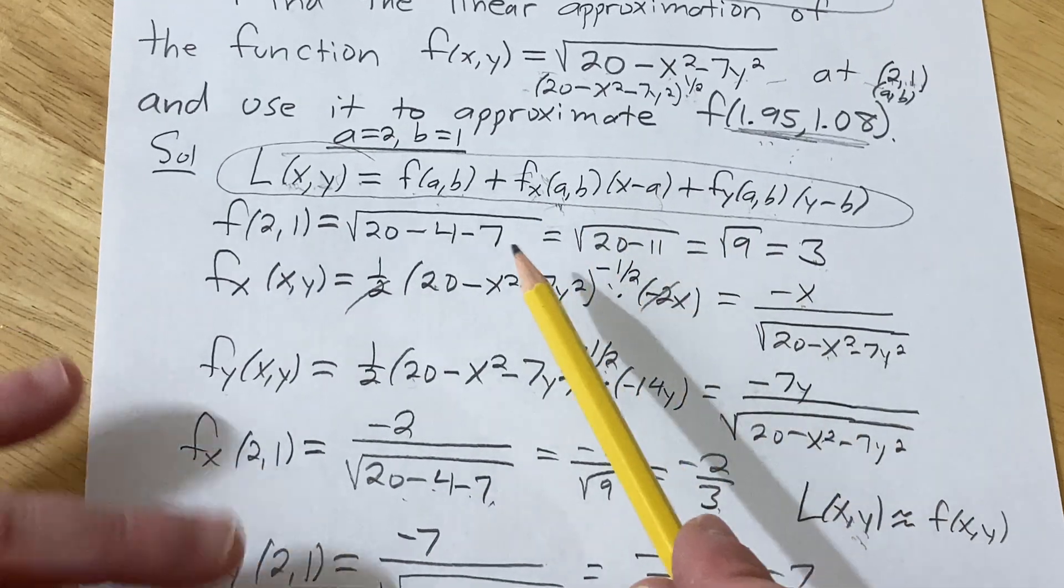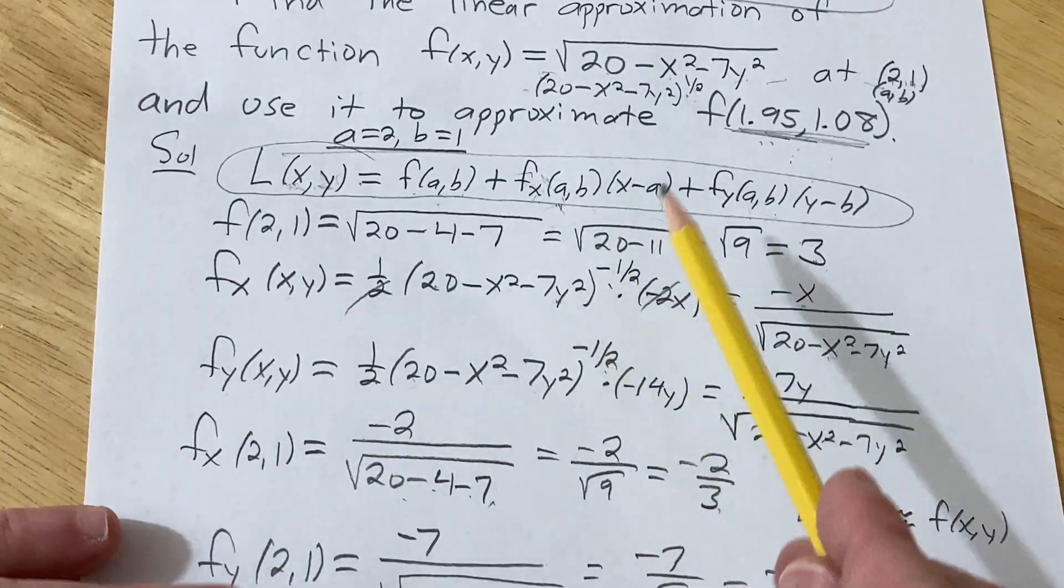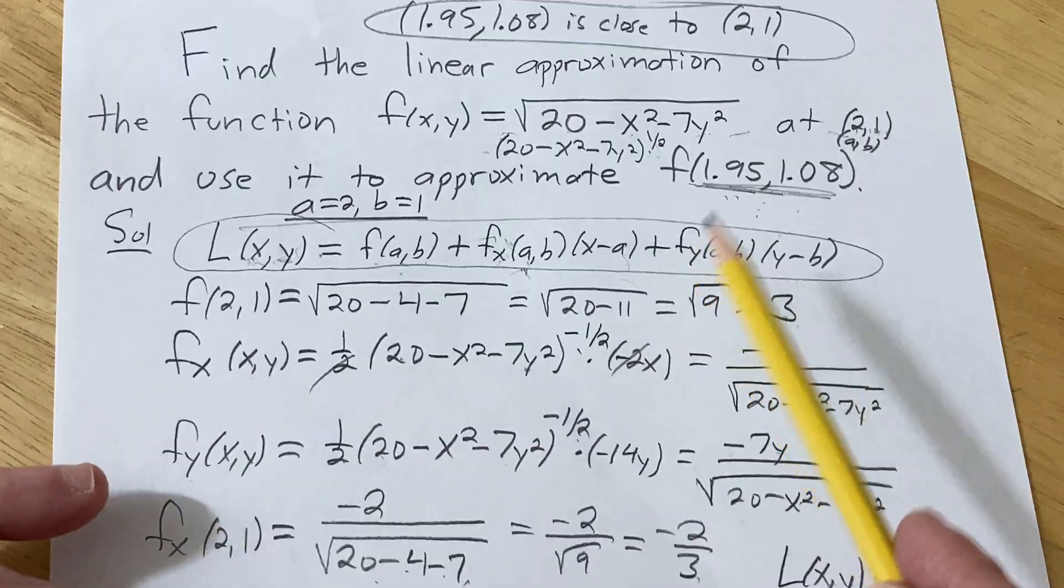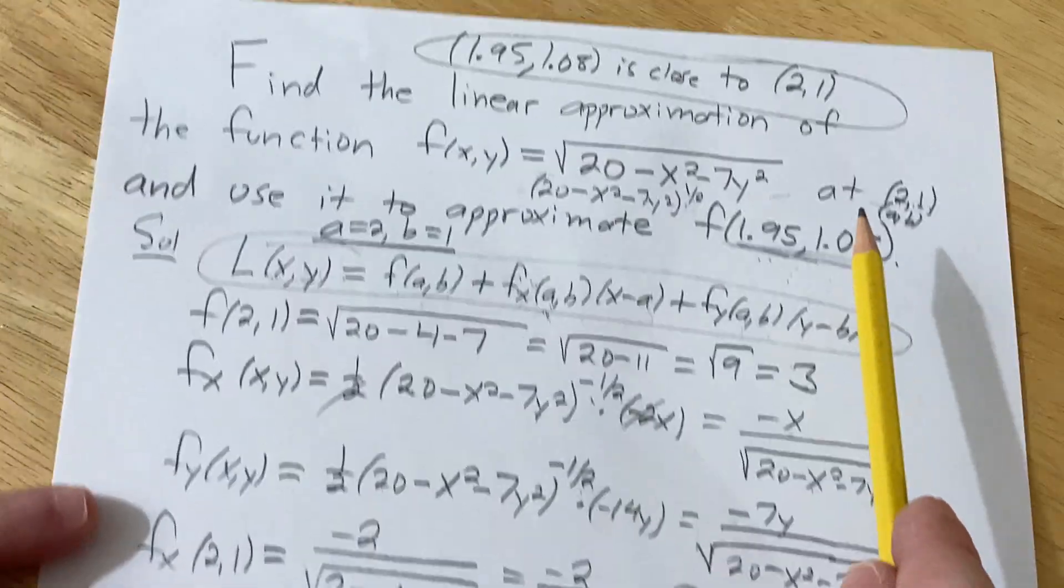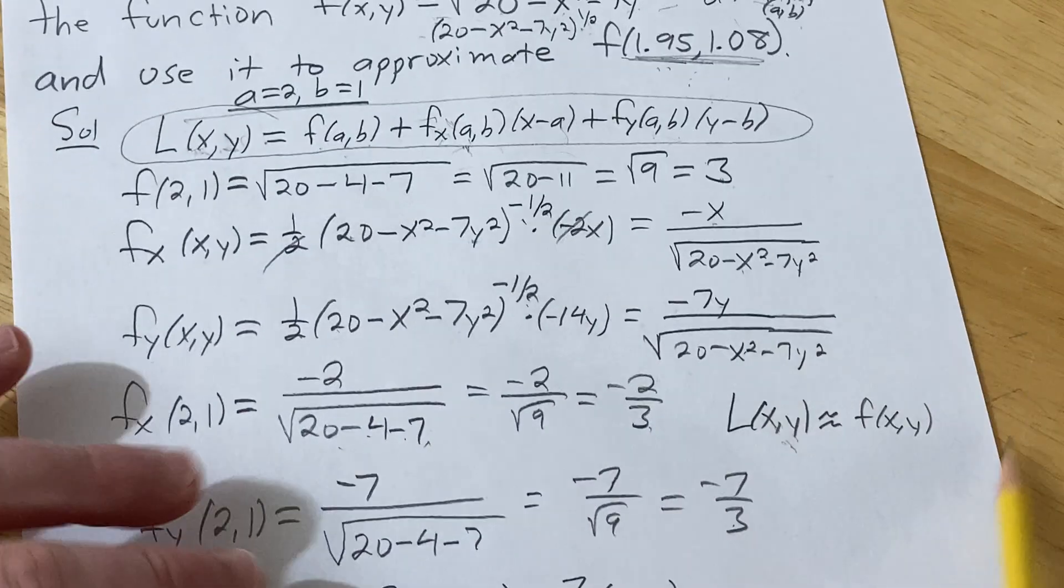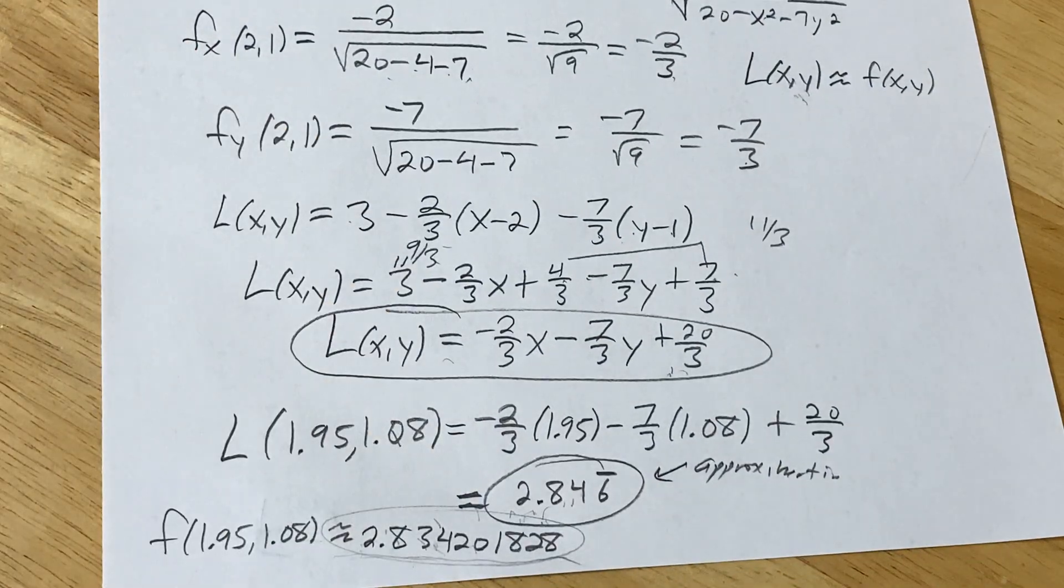So if you wanted to find out what was happening at like (8,10), you'd have to find the new linearization, right? So it's a local approximation. It only works when your ordered pair is close to (2,1). So yeah, pretty cool. Approximation stuff. Take care.